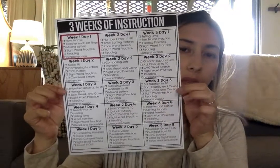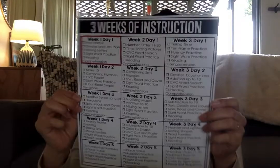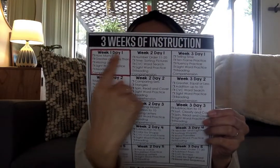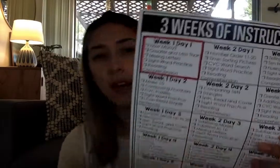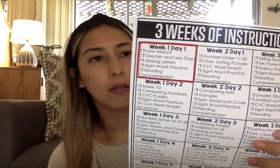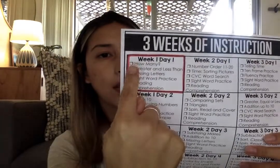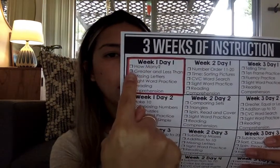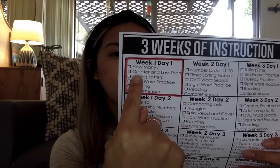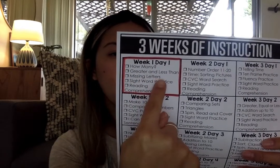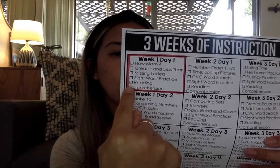For the next part of the video, I'm going to go over your home learning packet for the day. We have a packet and one of the pages tells you what week we're on and what day we're on. Since it's Monday and we are back from spring break, you should be starting with week one, day one. These are the activities you should be doing: how many, greater and less than, missing letters, sight word practice, and reading comprehension.